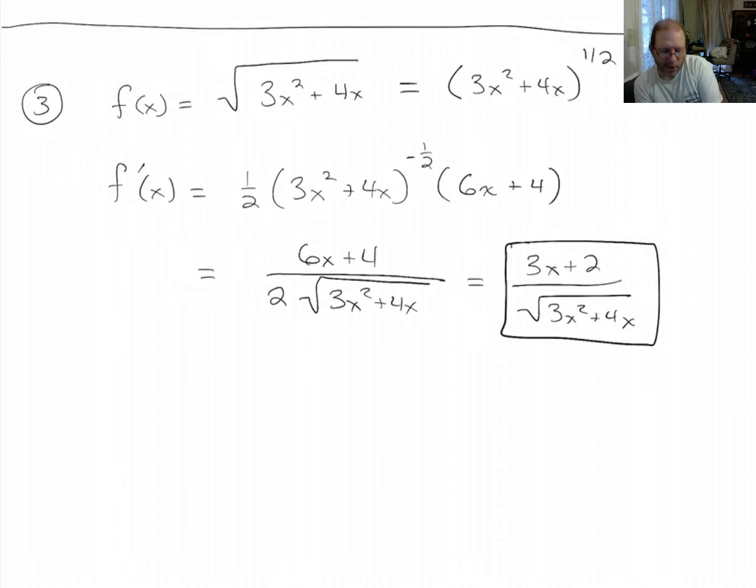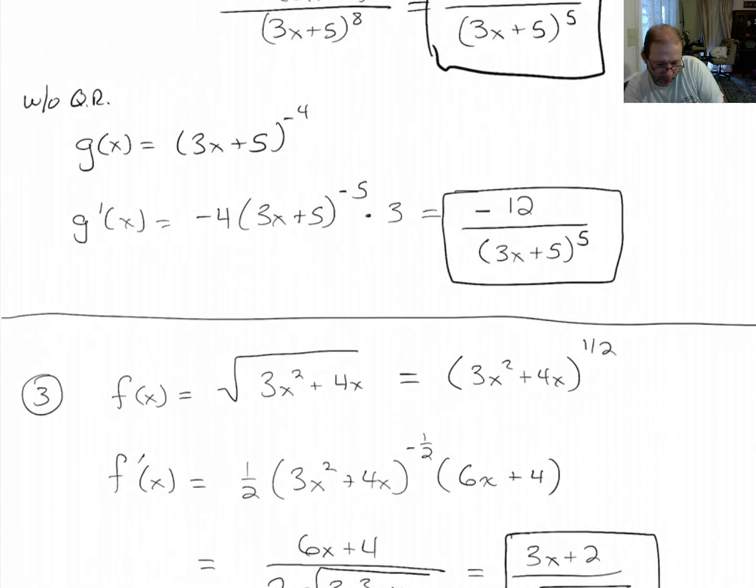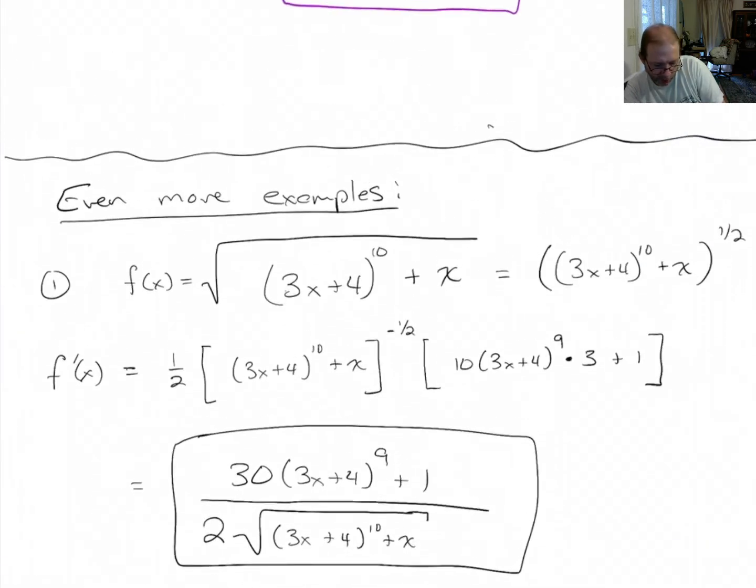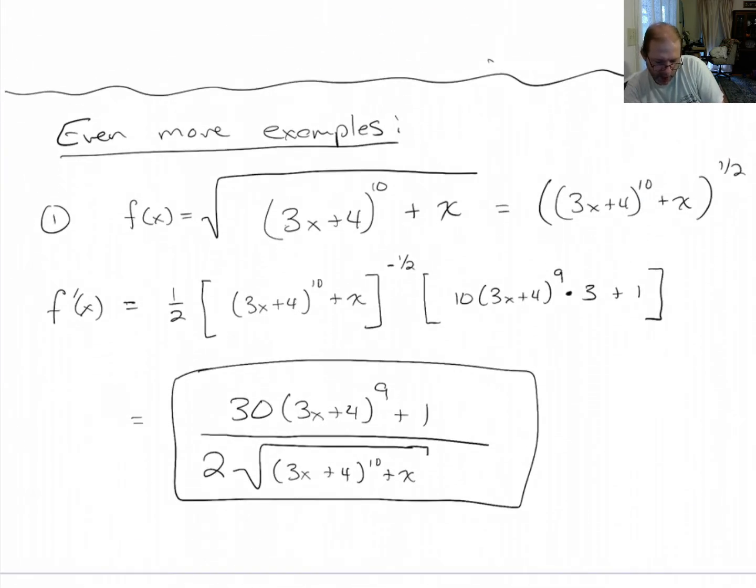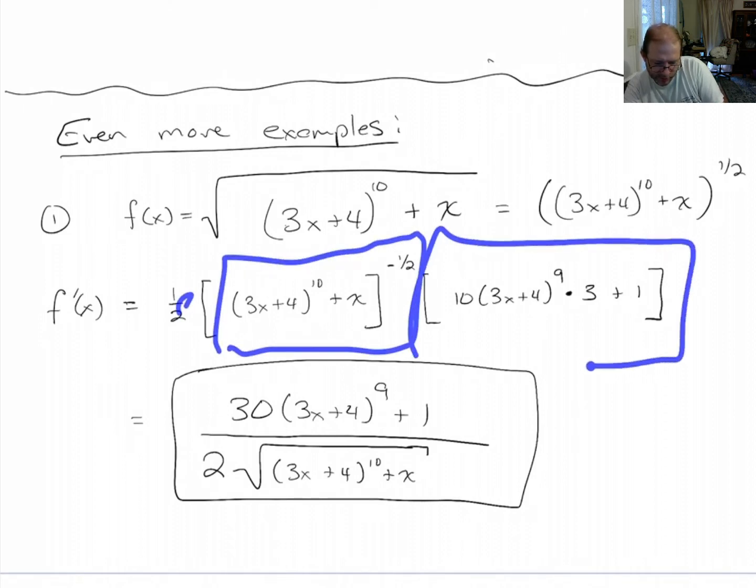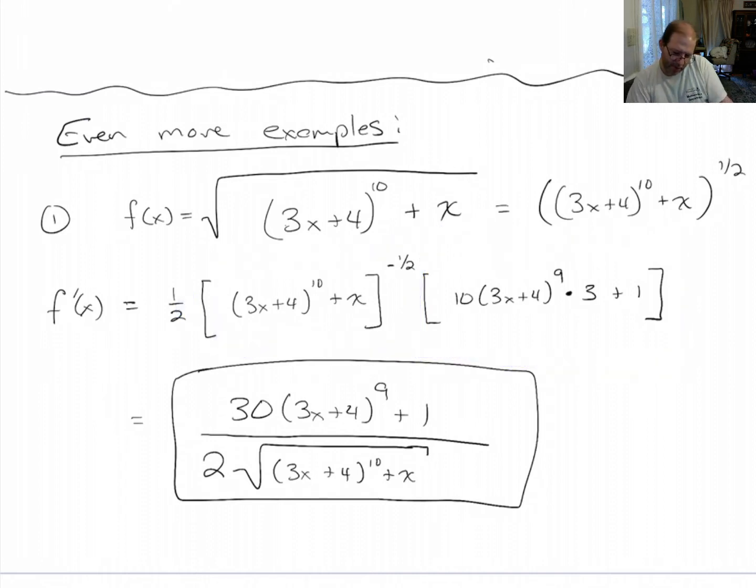Now, one thing you might notice, this had a lot in common with this other example. Notice on both of these, what we wind up doing is we get 1 half times this stuff to the minus 1 half and then times the derivative of what's inside. And notice what happens.